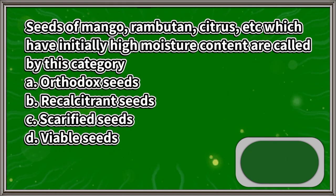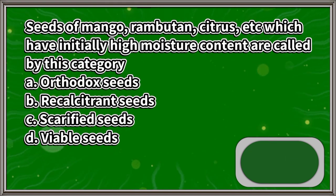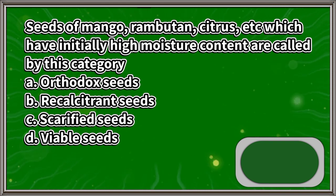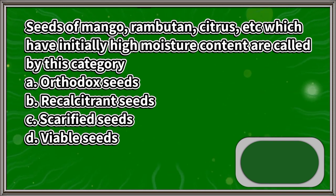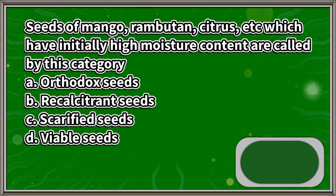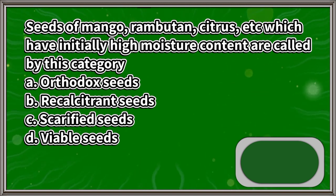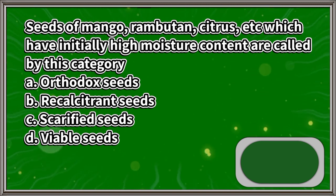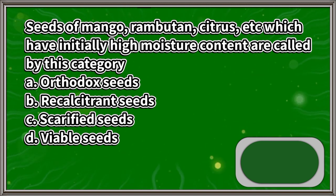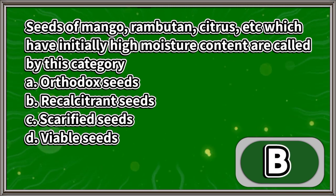Seeds of mango, rambutan, citrus, etc., which have initially high moisture content, are called by this category: A. Orthodox seeds, B. Recalcitrant seeds, C. Scarified seeds, D. Viable seeds. The answer is letter B.